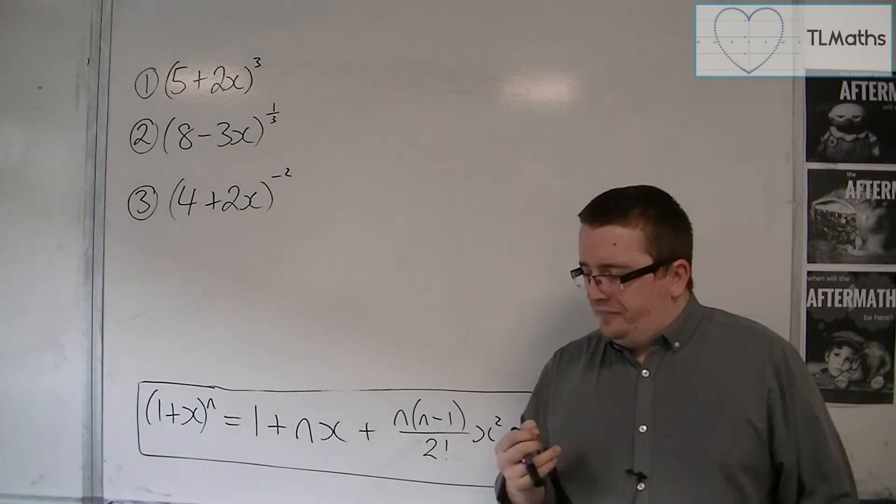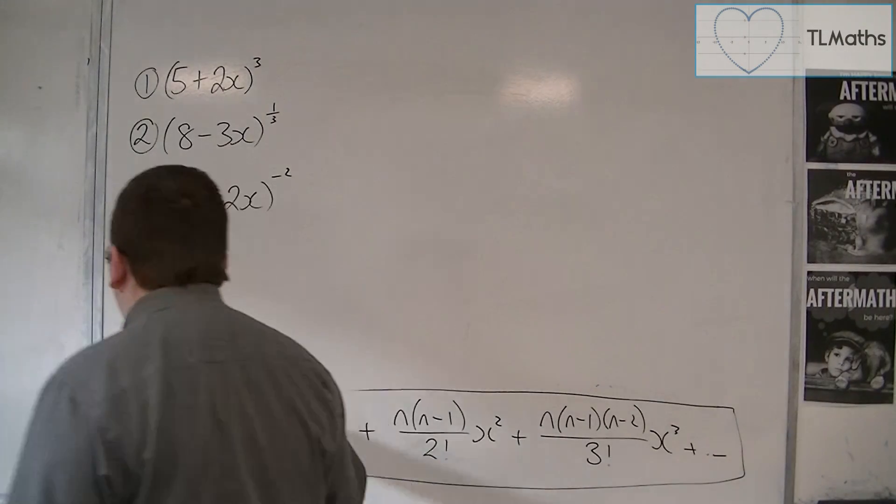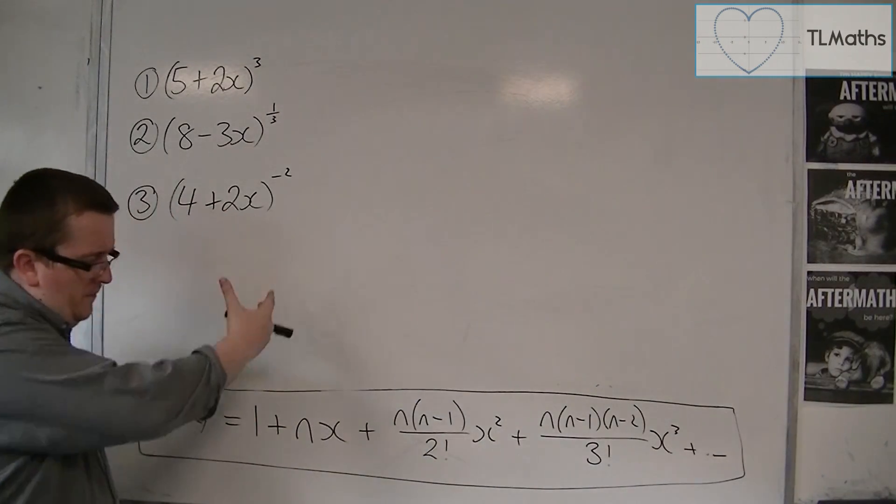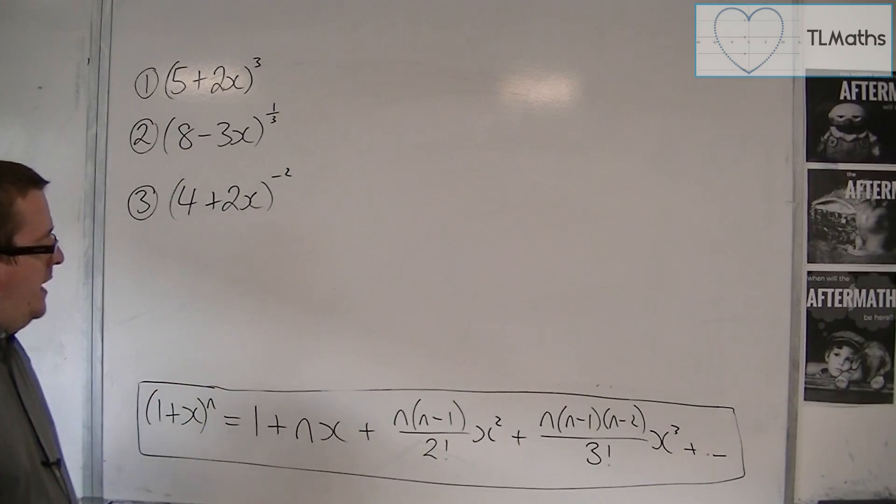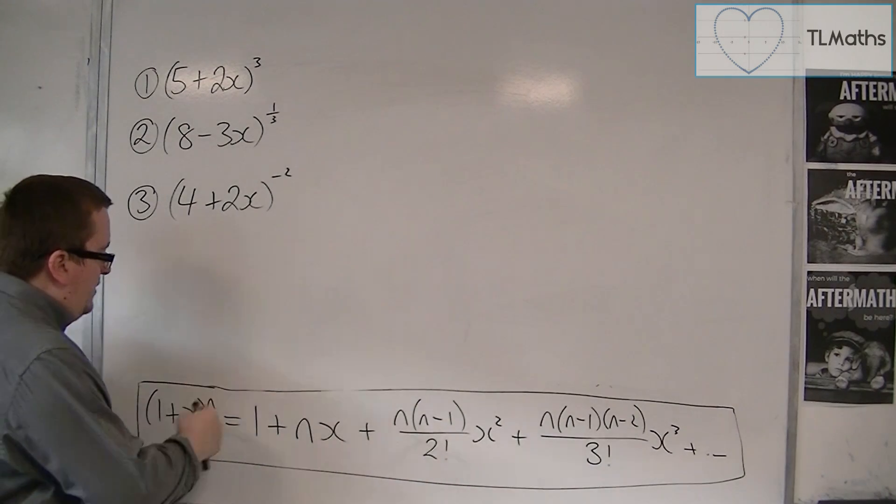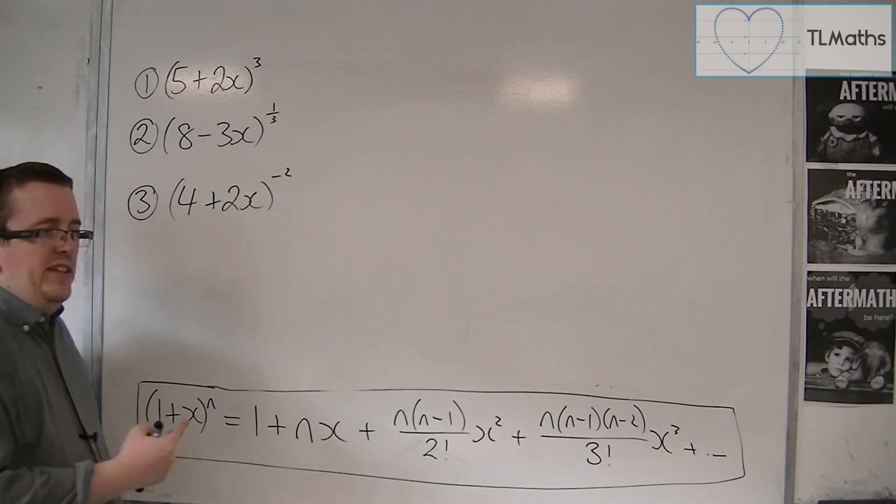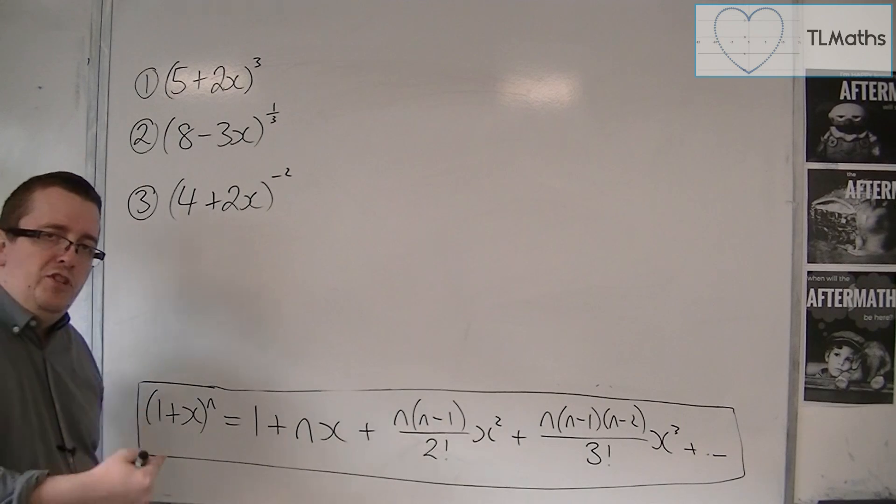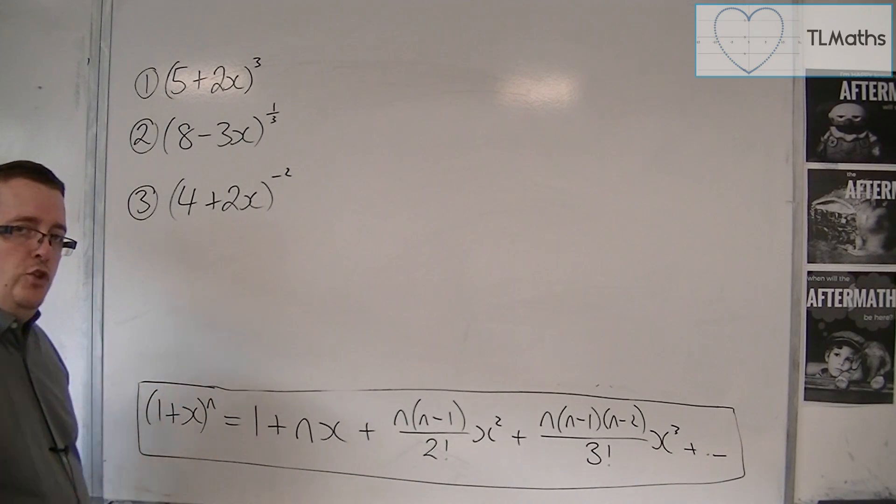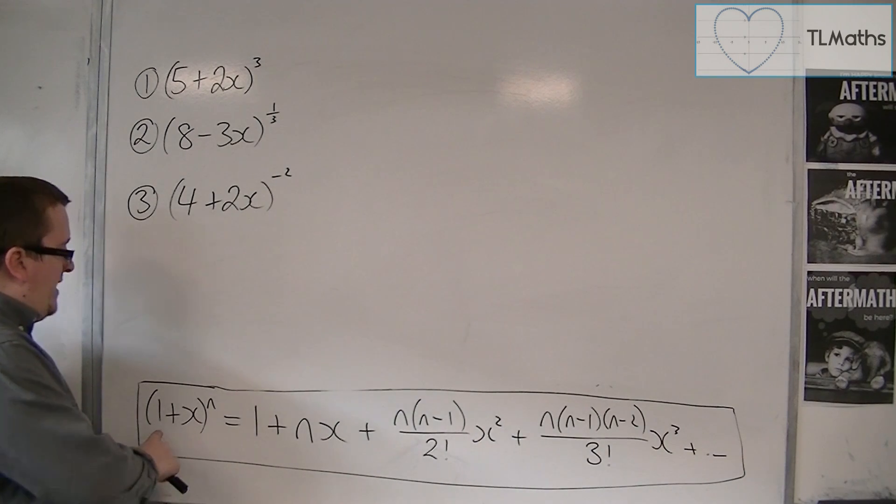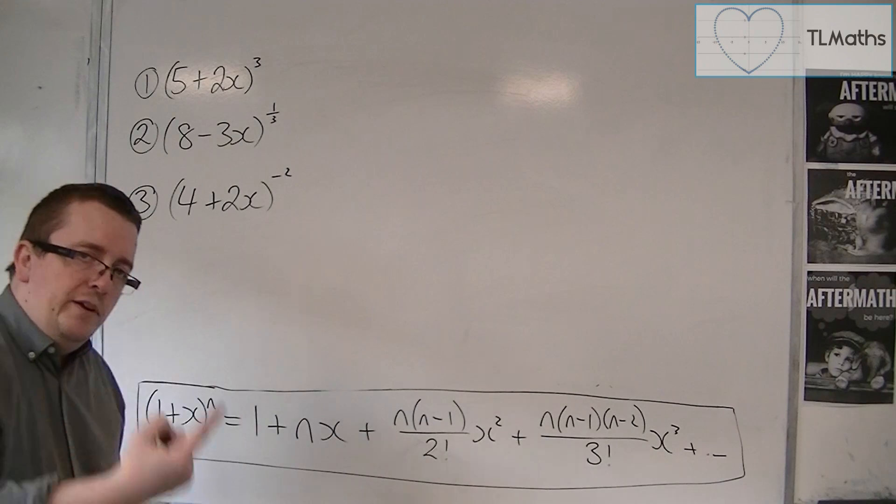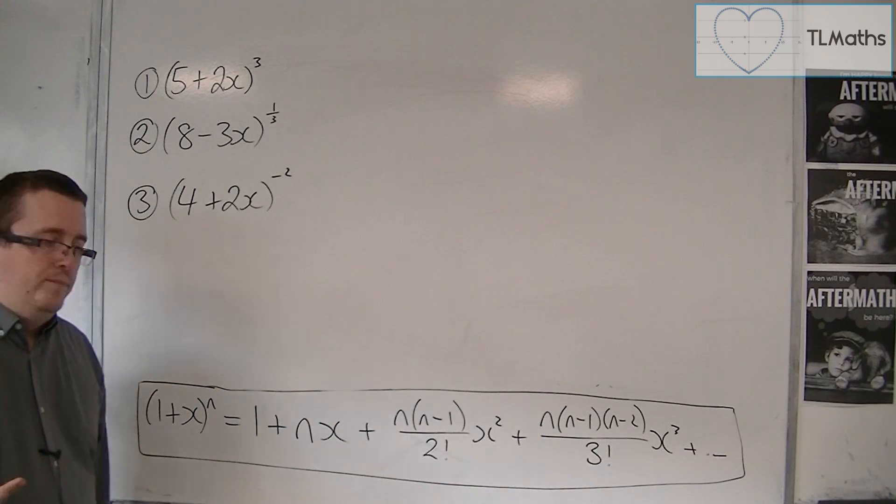However, when we were using the Maclaurin series to get to this form, we had to differentiate 1 plus x to the n several times, and then substitute 0 into each of them. That worked out quite nicely because we kept on getting 1 to the power of n, or 1 to the power of n minus 1, or 1 to the power of n minus 2, which are all 1.